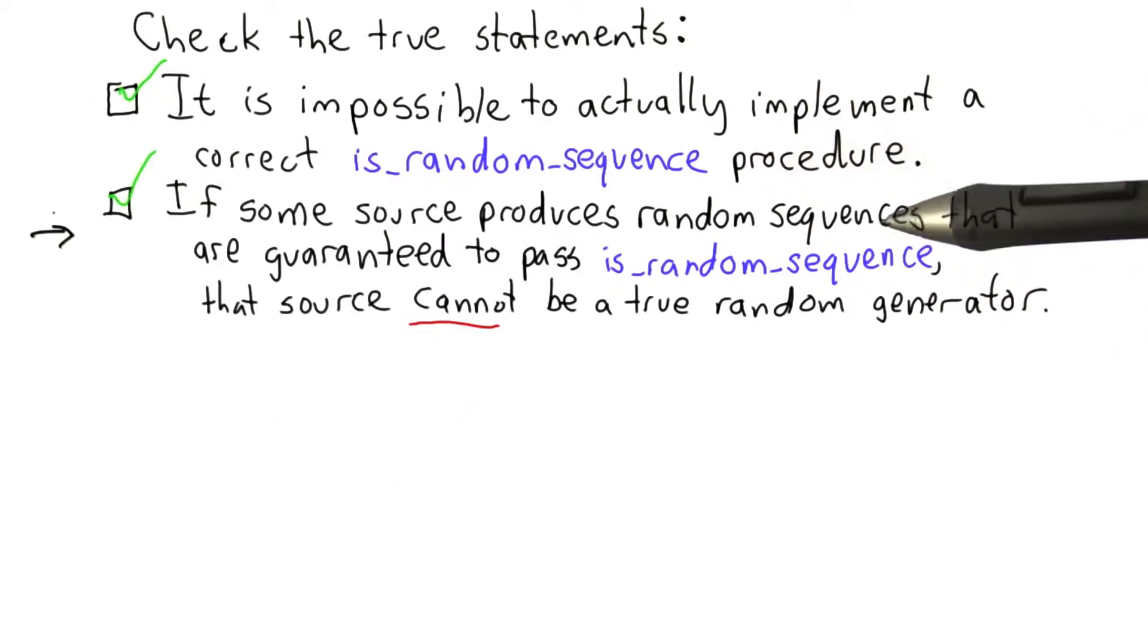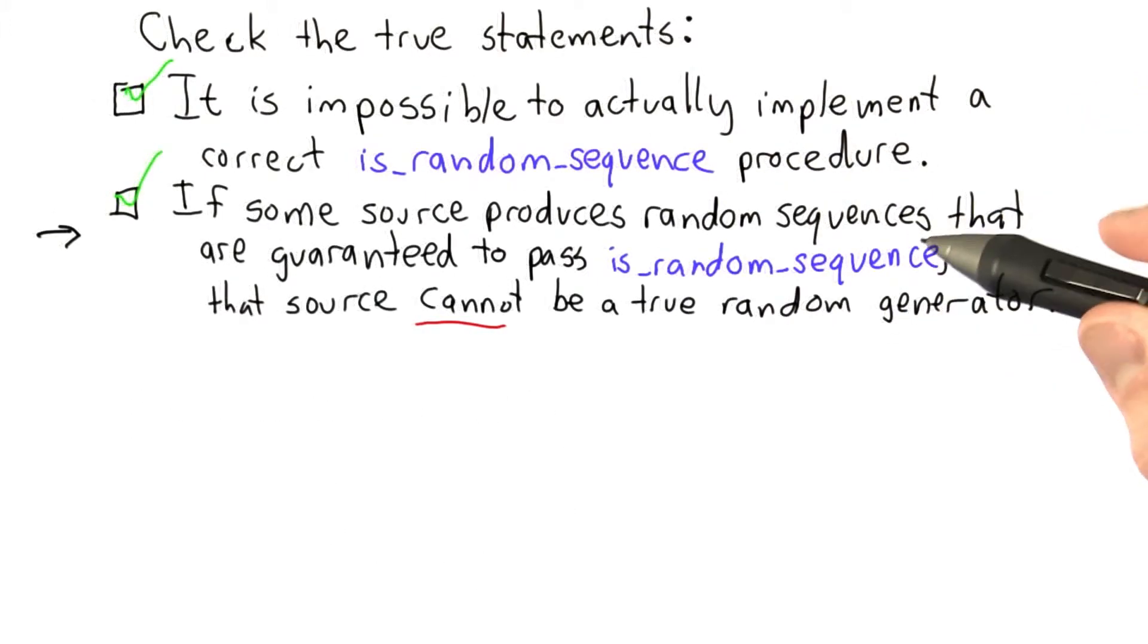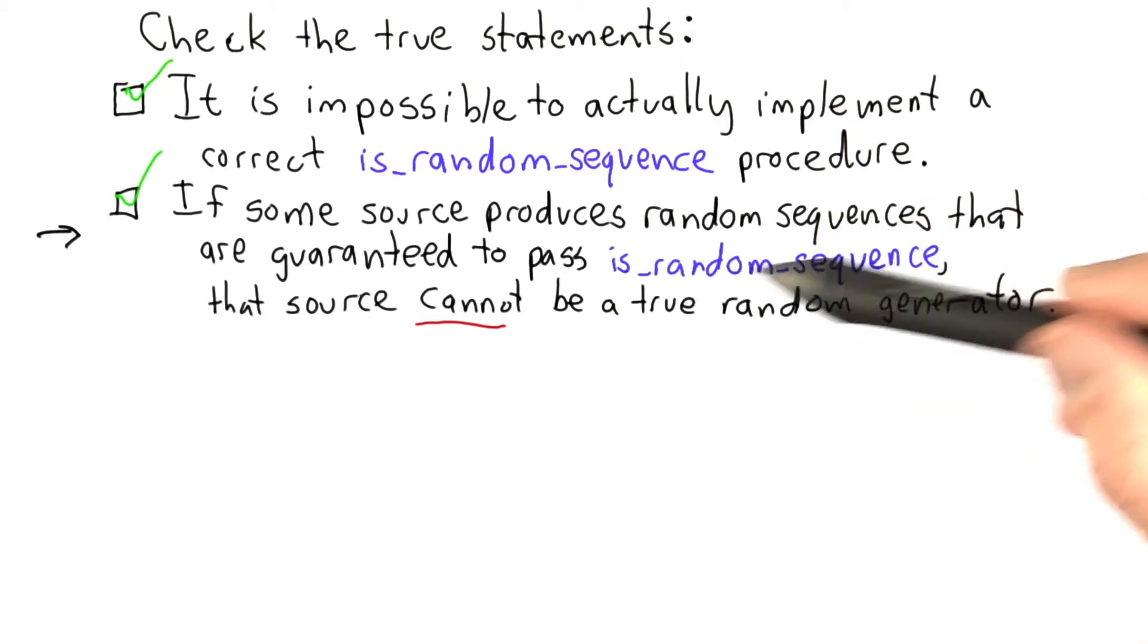The second statement is also true. This result is a bit counterintuitive. The reason this is true is that any true random number generator must eventually produce sequences that fail isRandomSequence.